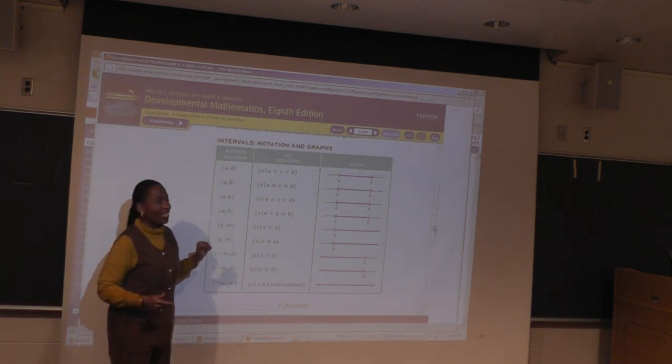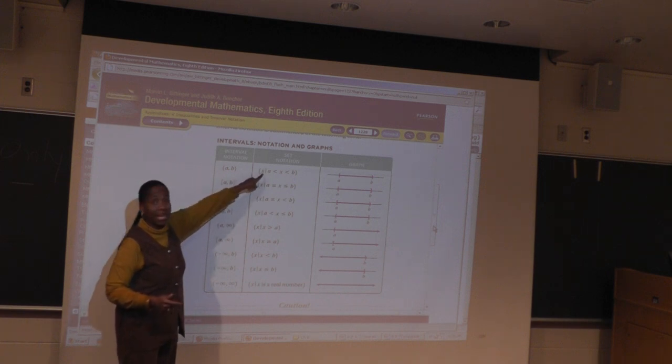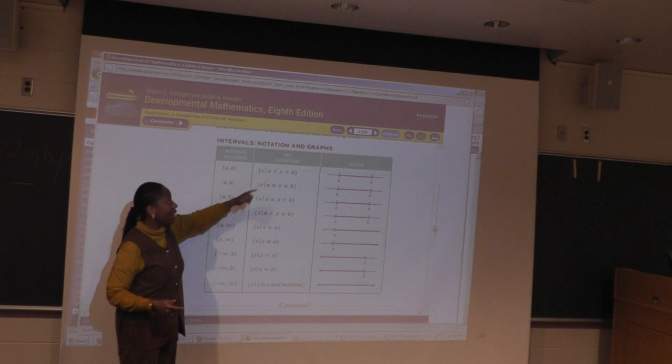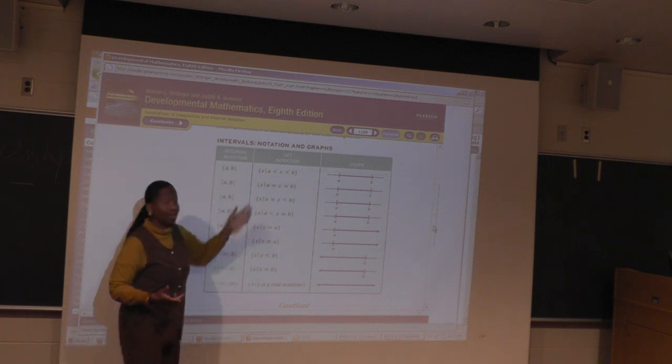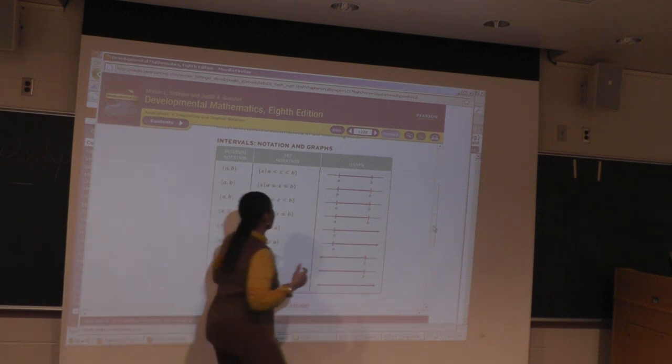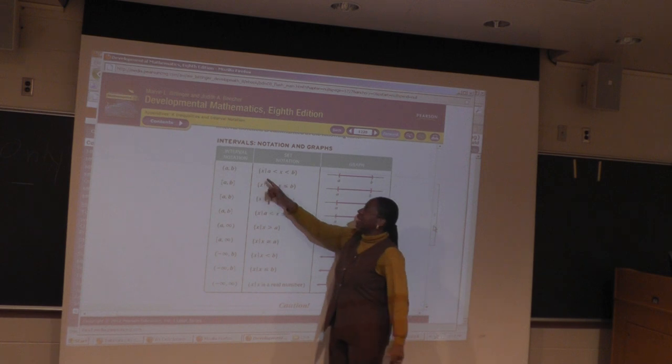The set of all such. The set of all. The set of all x. Such that. And then it's a is less than x less than b. No, there's no equal there. Less than b. Okay, so the set of all x such that a and then.